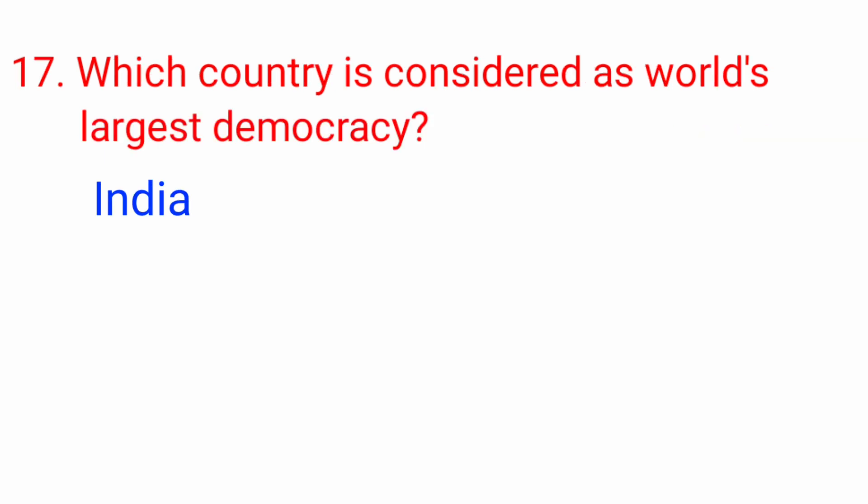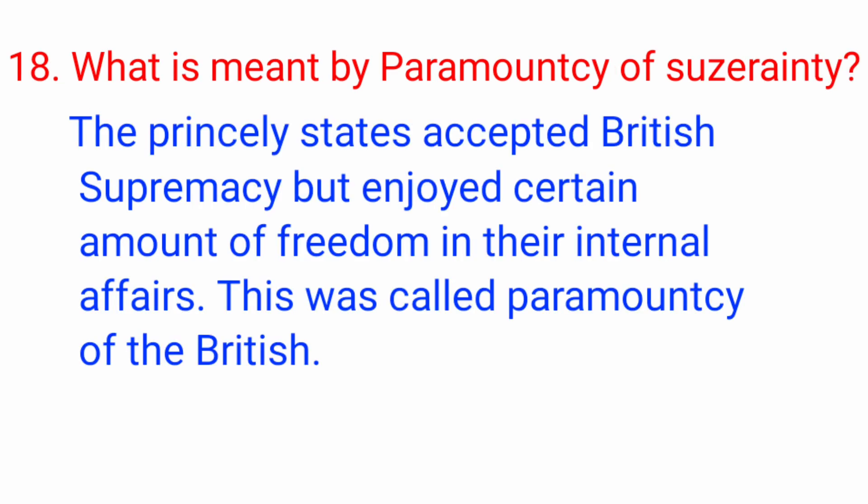Question number 17: Which country is considered as the world's largest democracy? Answer: India. Question number 18: What is meant by paramountcy or suzerainty? Answer: the princely states accepted British supremacy but enjoyed a certain amount of freedom in their internal affairs. This was called paramountcy of the British.